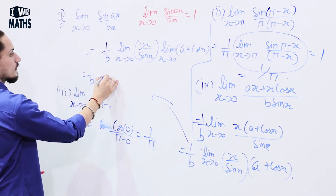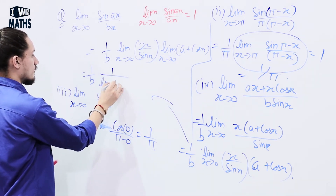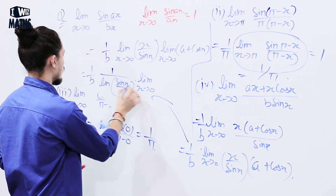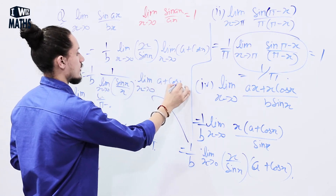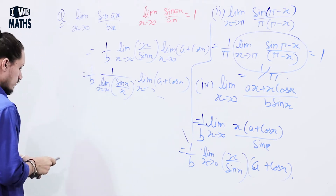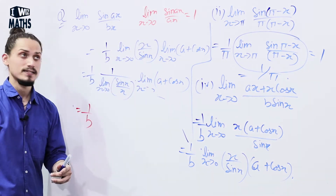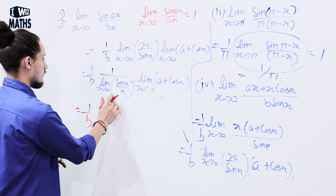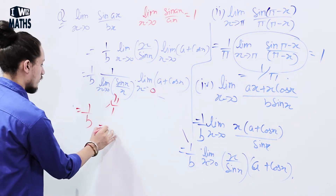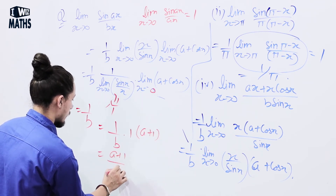This equals (1/b) × (1/1) × (a + cos(0)) since lim (x→0) sin(x)/x = 1, so lim x/sin(x) = 1. And cos(0) = 1, so we get (1/b) × 1 × (a + 1) = (a + 1)/b. And that's the result.